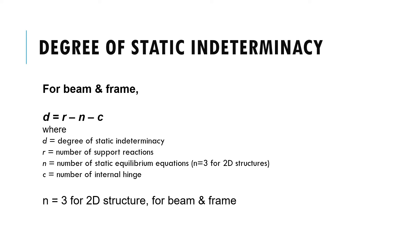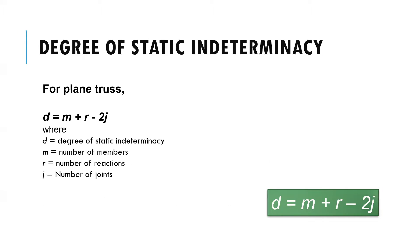Since n is equal to 3 for 2D structures, for beams and frame structures, d is equal to r minus 3 minus c. Whereas for plane truss, d is equal to m plus r minus 2j, where m is number of members, r is number of reactions, and j is number of joints.